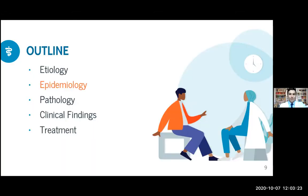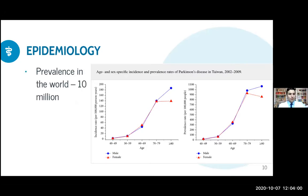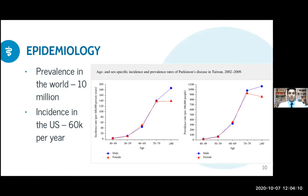Now let's go to epidemiology. This graph was made by our Taiwanese colleagues. We can see the incidence on the left and the prevalence on the right. Basically what this graph tells us is that incidence increases with age, and there is almost no gender preference in Parkinson's disease. There are 10 million people with Parkinson's disease today, and every year 60,000 people in the U.S. develop Parkinsonism.